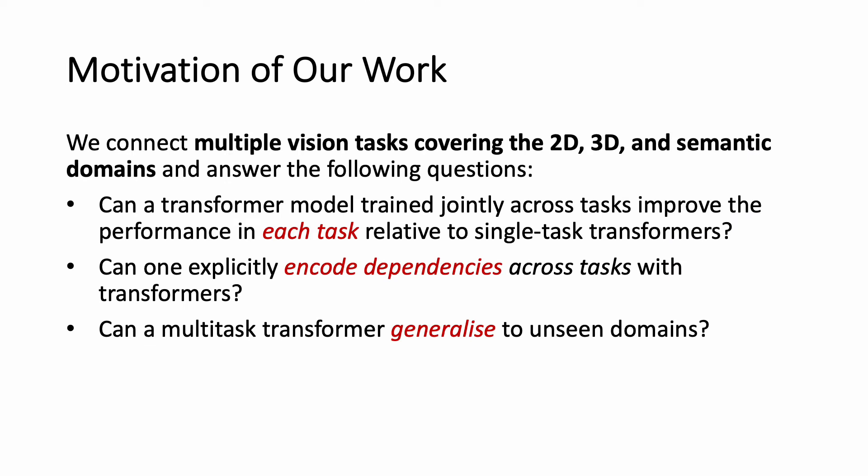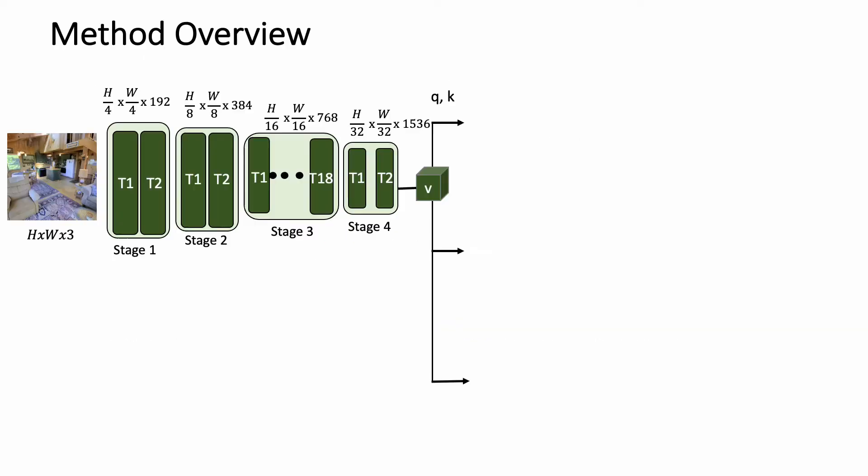Based on this premise, we answer the following questions: Can a transformer model trained jointly across tasks improve the performance in each task relative to single-task transformers? Can one explicitly encode dependencies across tasks with transformers? And can a multitask transformer generalize to unseen domains?